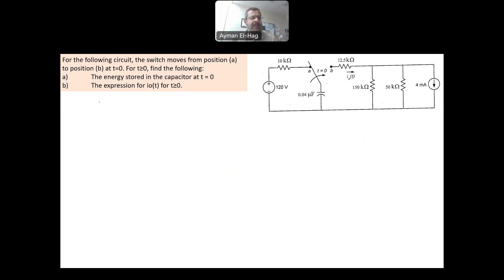In part B, we want to find the expression of I0 of T. We start by setting up the solution format, which is K1 plus K2 E minus T over tau. And we know we have three unknowns: K1, K2, and tau.